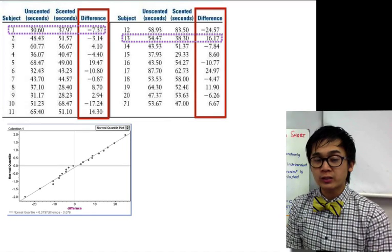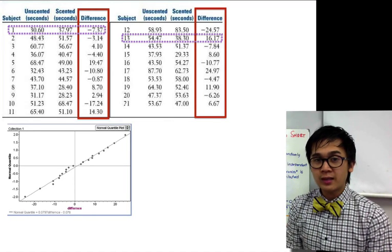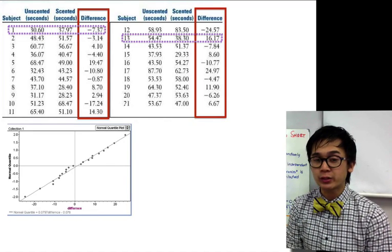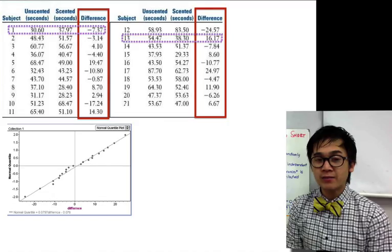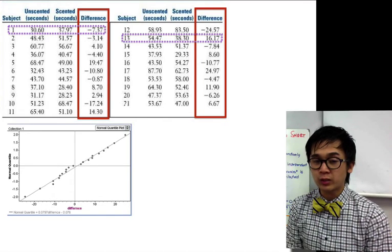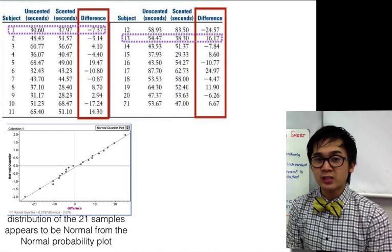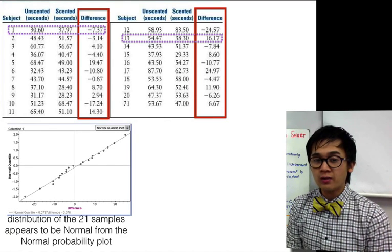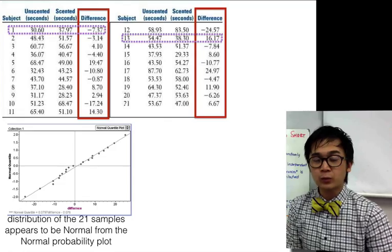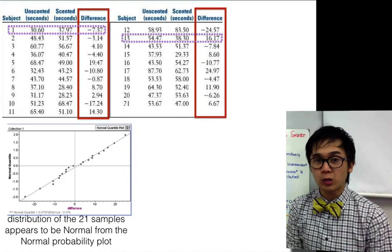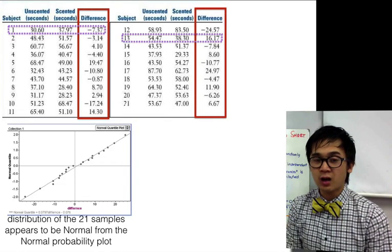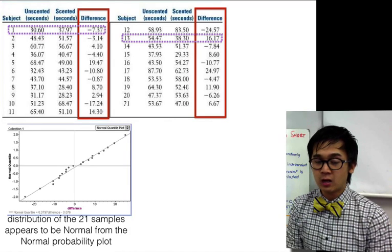For our conditions, we need to make sure the distribution is normal. This graph is the normal probability plot. We know it's not skewed because almost all the data points are close to the diagonal line. So in this normal probability plot, we can say the distribution is normal using the difference column.